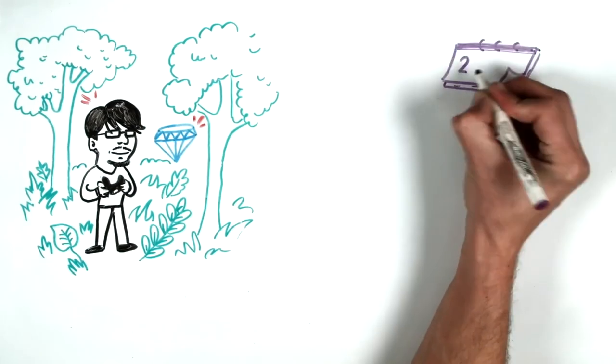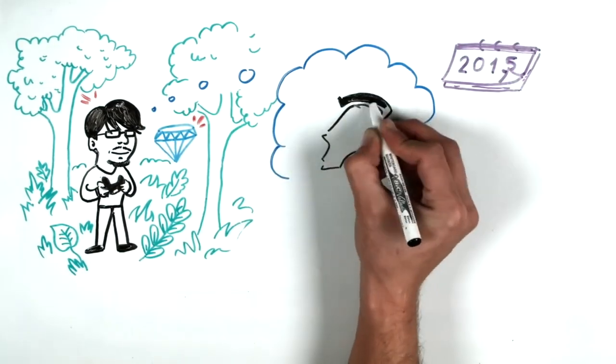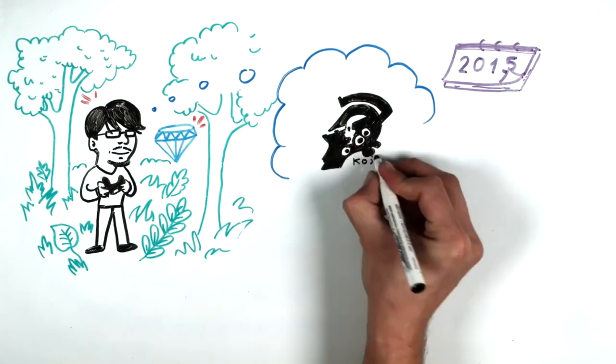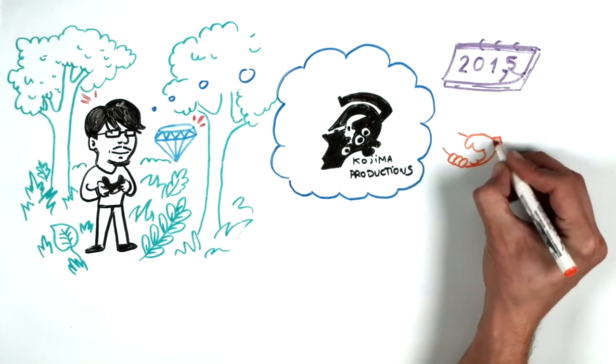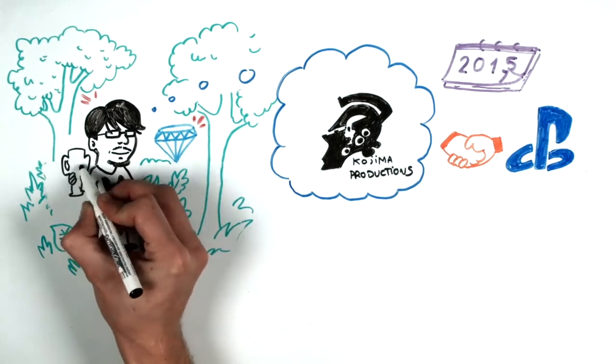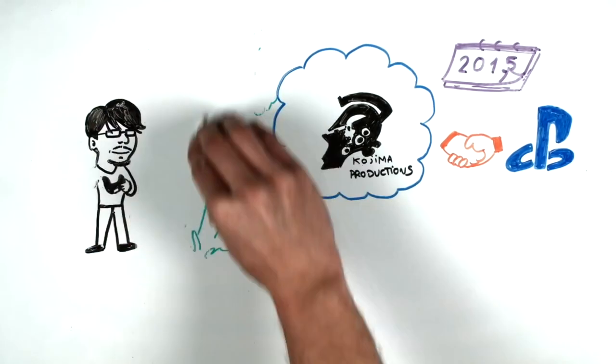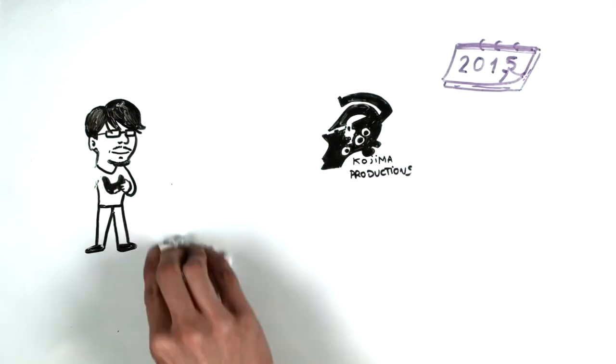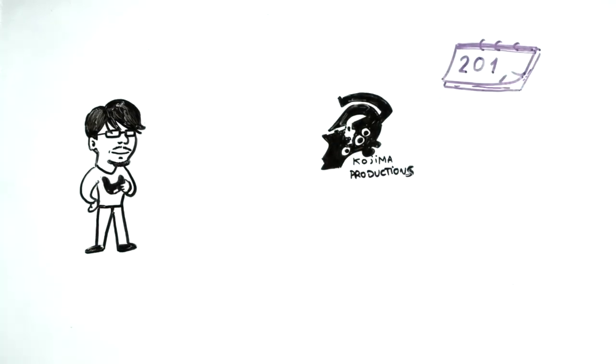On December 15, 2015, he stated that he had formed a new studio called Kojima Productions and that he'd work on a new title for PlayStation 4. That same year he was awarded the MVP award. In 2016 he presented the first preview of his first title under Kojima Productions, Death Stranding.